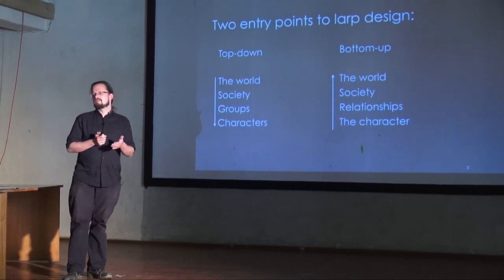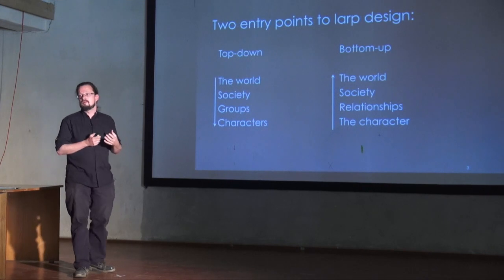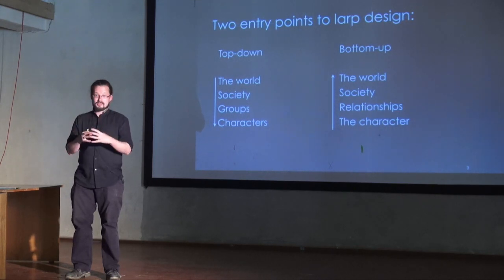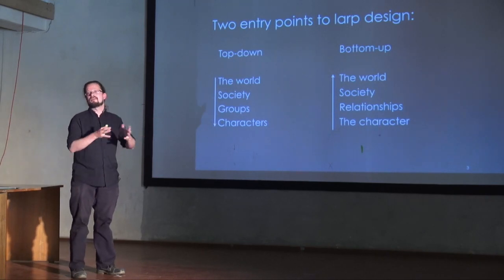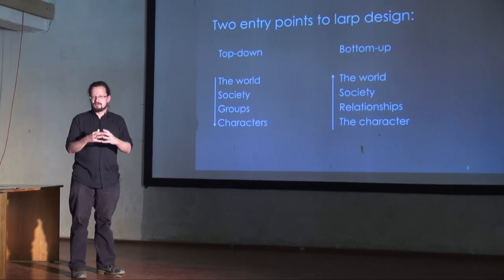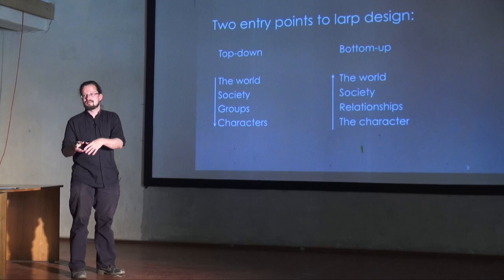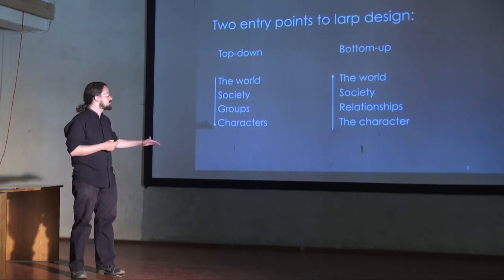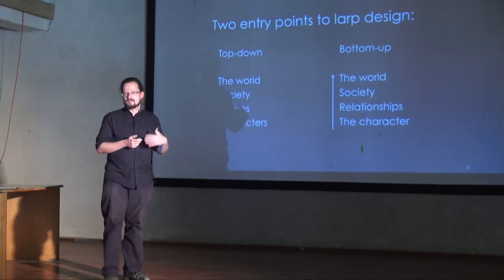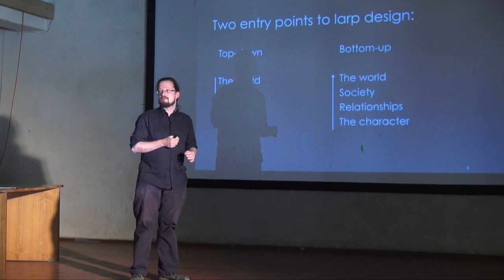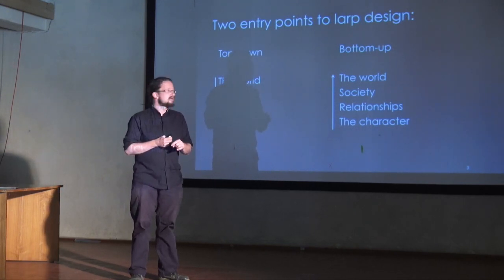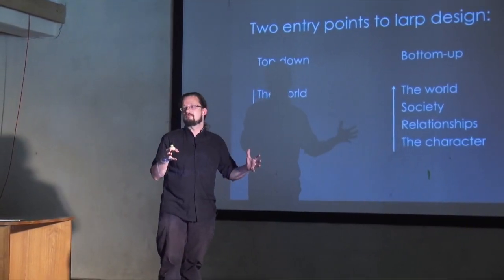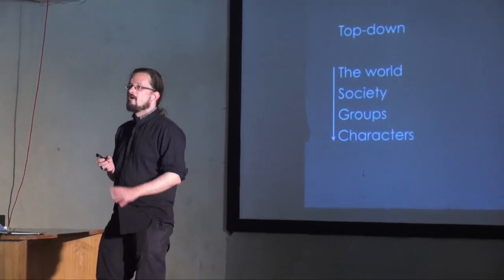There are two basic ways to approach designing a LARP. One is a top-down approach — Johanna talking about Halat Hisar had a good example: they began with the world, moved down to society, then to the University of Helsinki, then to groups like students, military, and a Jordanian minister, and finally to individual characters. The other is a bottom-up approach: you begin with the character — who is an interesting person to write a LARP about? — then look at their relationships, society, and world.